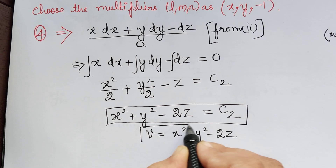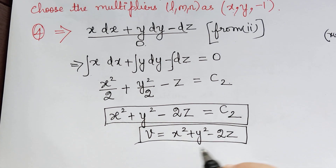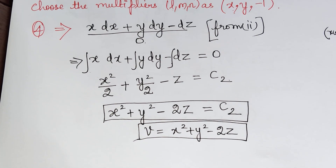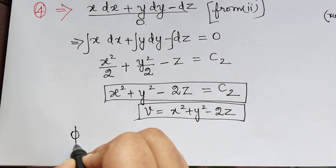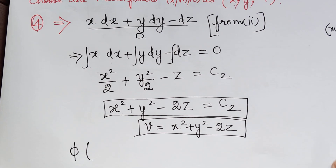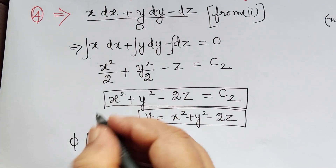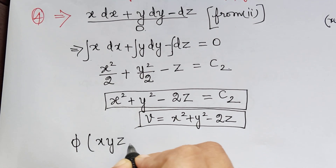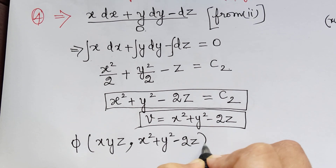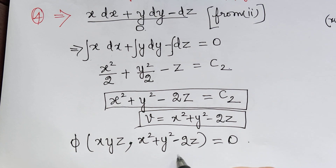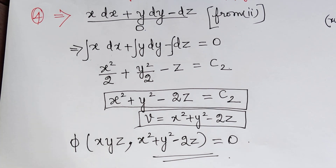Using solutions u and v, the general solution is φ(u, v) = 0, which is φ(xyz, x² + y² − 2z) = 0. Hope you have understood this problem. Thank you.